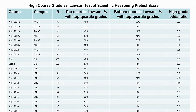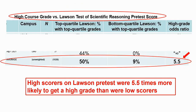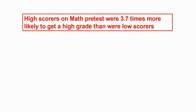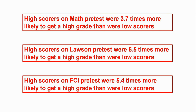Similar data holds for the Lawson test. Cutting to the chase: the ratio is more than five to one — a higher probability of getting a high grade for top-quartile scorers. This pattern follows through for the FCI as well. High scores on the pretest were much more likely to get a high grade in the course.